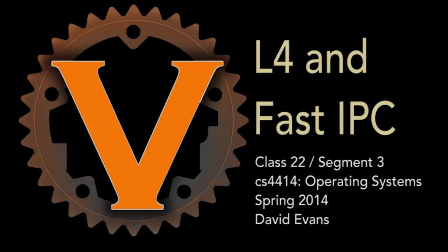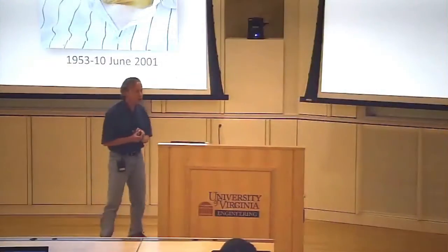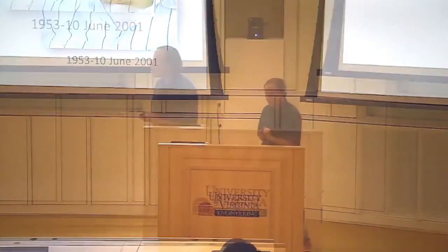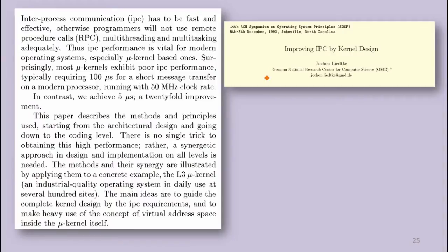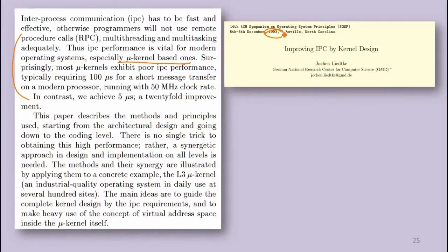L4 came from a project started by Jochen Leidke, who had quite a career in industry before going back to academia to build a microkernel where IPC was really fast. The reason IPC is so fast in L4 — and why it makes sense that all your phones are running it — is the design, motivated in 1993 by experience with microkernels that weren't fast enough. That's why monolithic kernels were surviving: poor IPC.